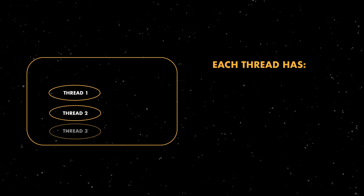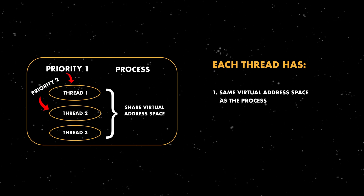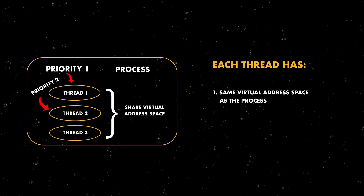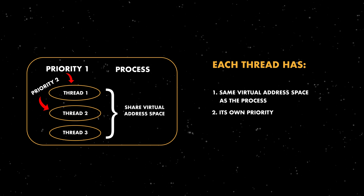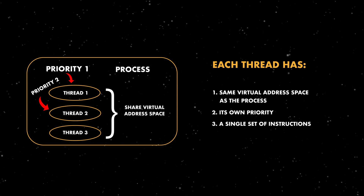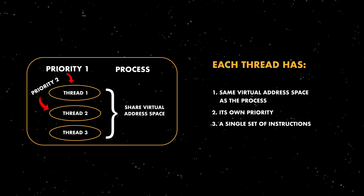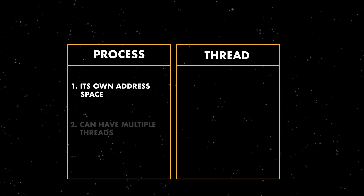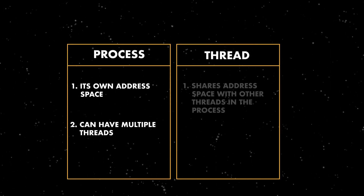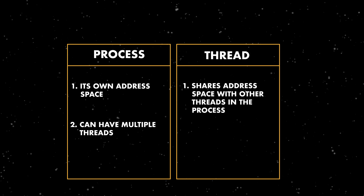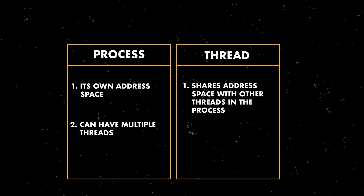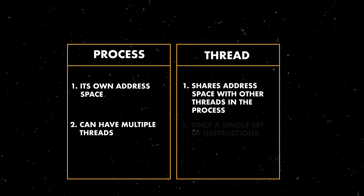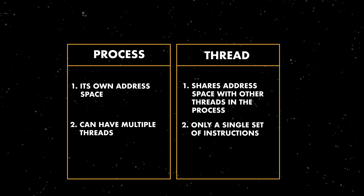Working set sizes refer to the amount of RAM currently being used by the process. The thread of execution is the sequence of instructions — a unit of execution run by the CPU. A process can have multiple threads, but each of them will share the virtual address space of the process. They have their own scheduling priority within the process, and each thread has only one set of instructions — its own thread of execution. So processes are separated from each other in different address spaces and can have multiple threads, while threads share the same address space and resources allocated to the process.